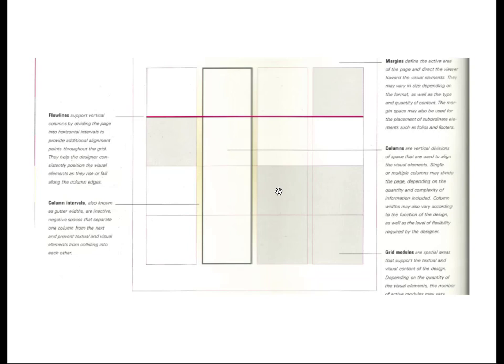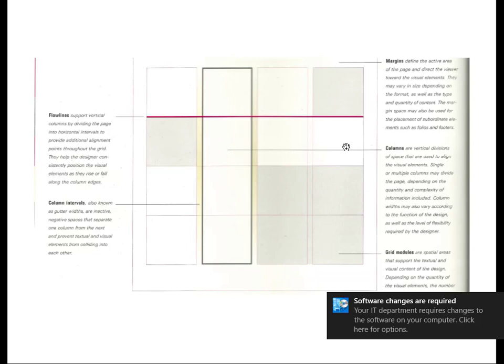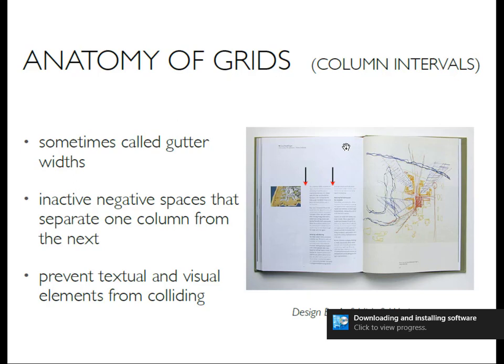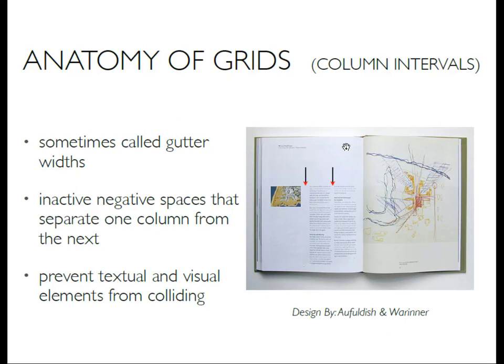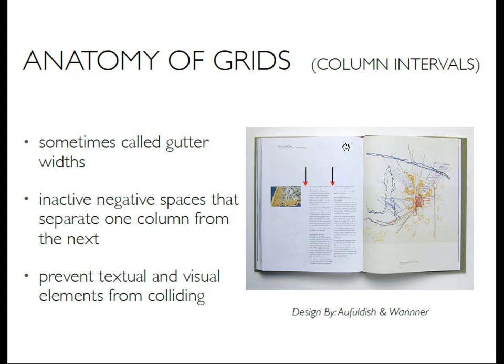Column intervals, also called gutter widths, are the inactive negative spaces that separate one column from the next. They prevent textual and visual elements from colliding. Just as we created separation between images last class, column intervals create negative space around the information on your page. The column intervals in a grid are represented by the space between all columns.